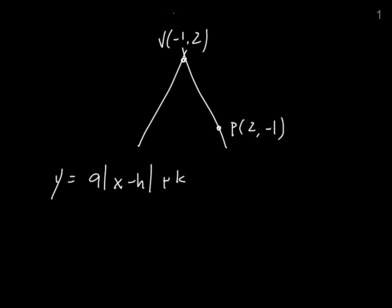Since you know what h and k are, you just have to plug them into your equation. So you have y equals a absolute value of x minus minus 1, which is plus 1, plus 2.